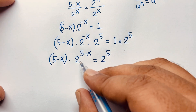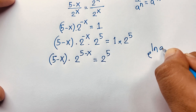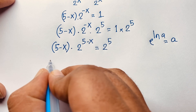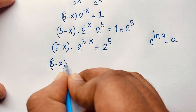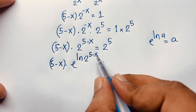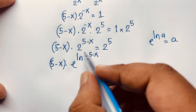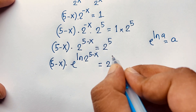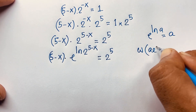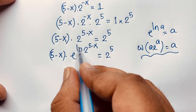To use the Lambert W function, I apply the formula: e to the power ln(a) is equal to a. So in this expression, 2 to the power (5 minus x) can be written as e to the power ln(2 to the power (5 minus x)), since e to the power ln(2 to the power (5 minus x)) equals 2 to the power (5 minus x). These are the same. Now writing in the form a·e to the power a for Lambert W, I move the exponent using the natural log law.